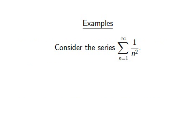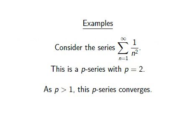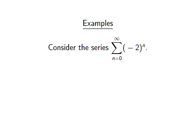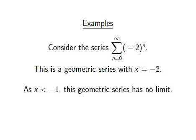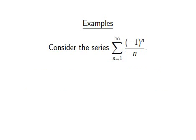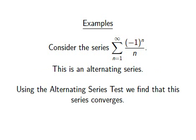Let us now look through a variety of examples. First, consider the series of 1 over n squared for n ≥ 1. We observe that this is a p-series where p equals 2, and our knowledge about p-series tells us this series converges. Next, consider the series of minus 2 to the power n for n ≥ 0. This is a geometric series where x equals minus 2, and since x is less than minus 1, this geometric series has no limit. The series of minus 1 to the power n over n for n ≥ 1 is an alternating series — note the change of sign in each element — and applying the alternating series test reveals that this series converges.